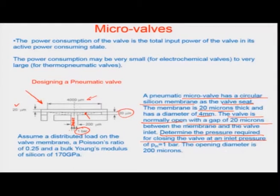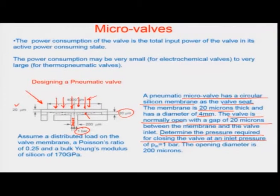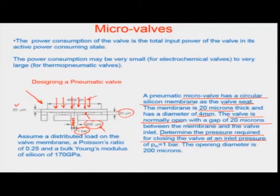We want to determine what is the pressure requirement on the other side of this membrane so that a total inlet pressure of 1 bar could be blocked. Given that the opening diameter is about 200 microns where this whole pressure is being exerted, we have to assume a distributed load on the valve membrane.